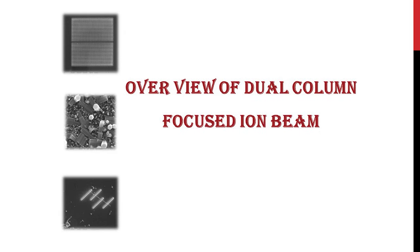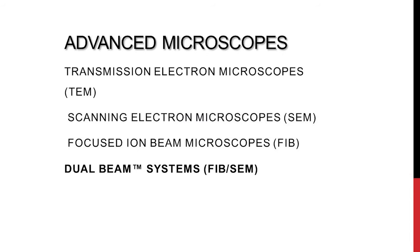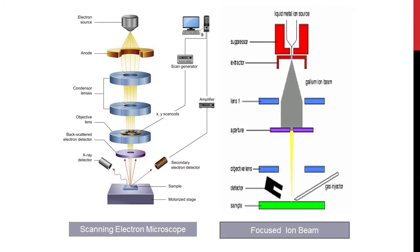Today we are going to look at the overview of the dual column system which is a focused ion beam. We have many advanced microscopes like transmission electron microscope, scanning electron microscope, and the focused ion beam dual beam system. Today we are going to learn thoroughly about dual beam systems. The dual beam system is a combination of SEM and FIB — a combination of the electron column as well as the ion column.